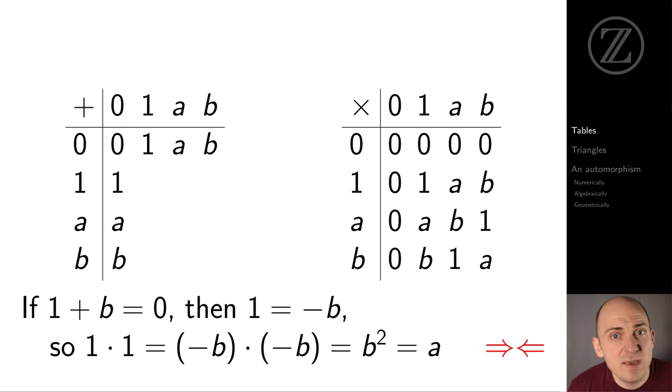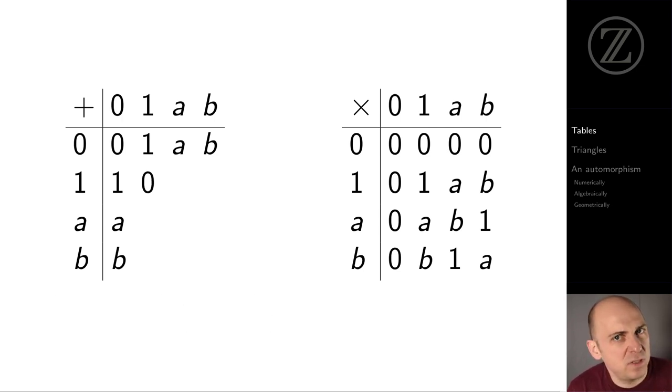For the same reason, we can't have 1 plus B equals 0. Because in that case, we'd find that B squared is 1. But B squared is A. So we'd again have that A is 1, a contradiction. So it must be that 1 plus 1 is 0.